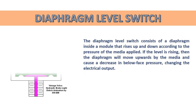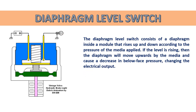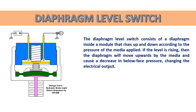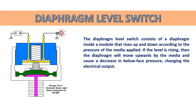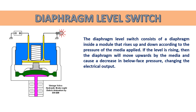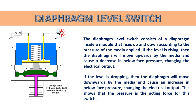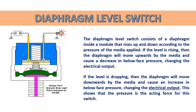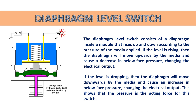Next is the diaphragm level switch. It consists of a diaphragm inside a module that rises and falls according to the pressure of the media applied. If the level is rising, the diaphragm moves upward, causing a decrease in below-phase pressure and changing the electrical output. If the level is dropping, the diaphragm moves downward, causing an increase in below-phase pressure and changing the electrical output. This shows that pressure is the acting force for this switch.